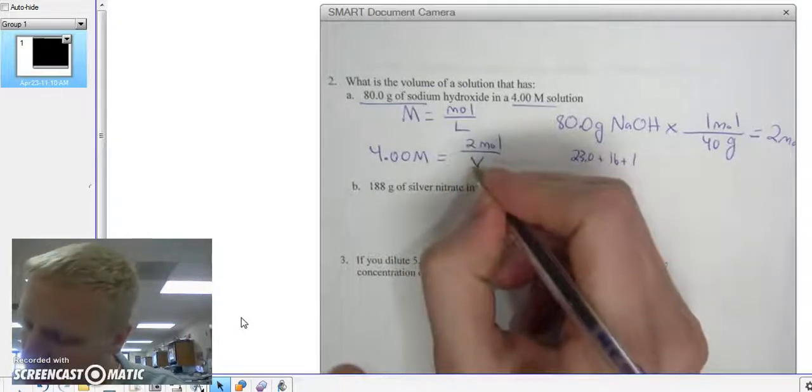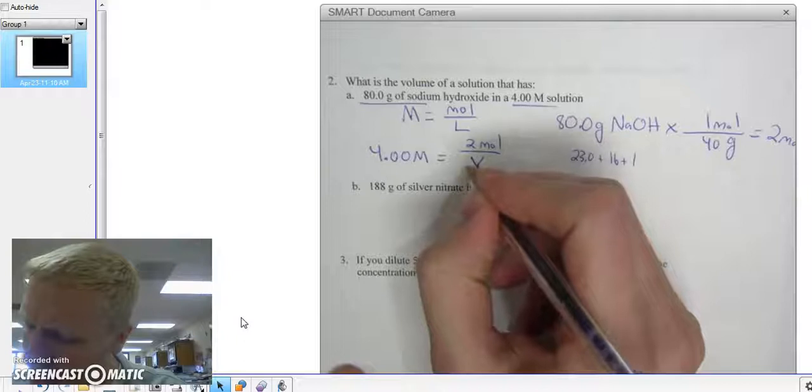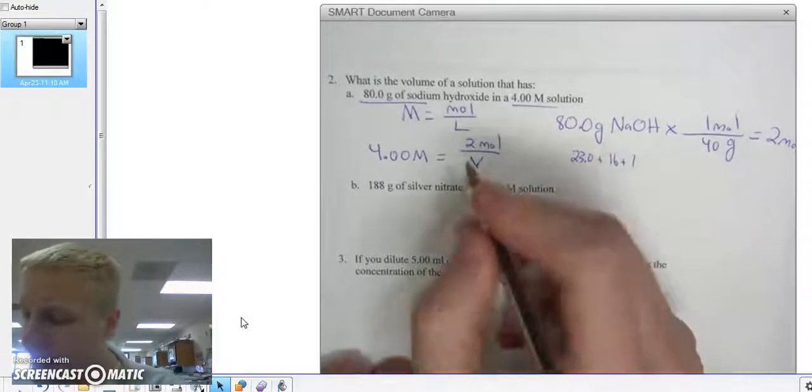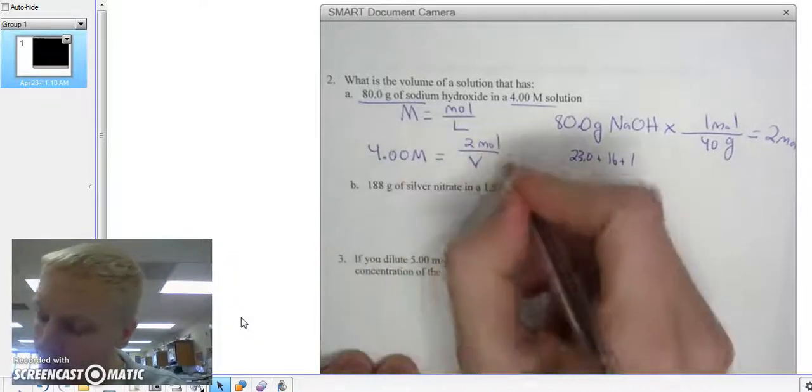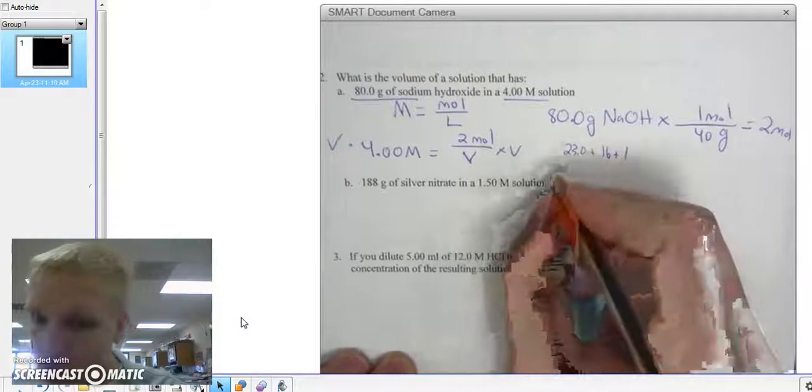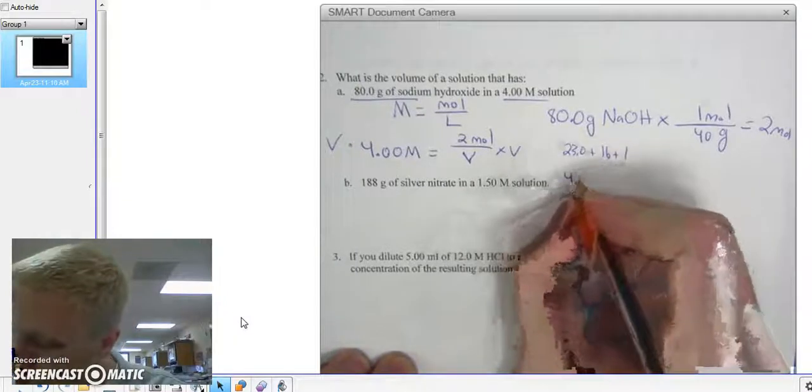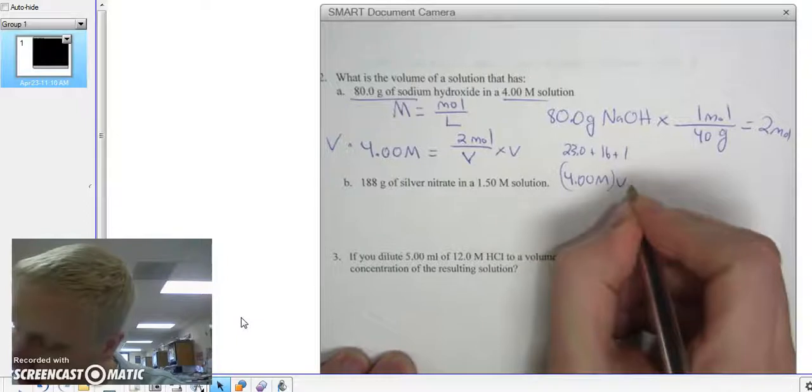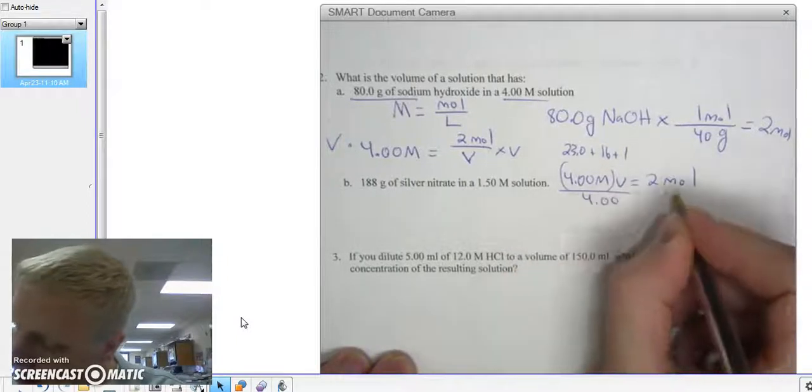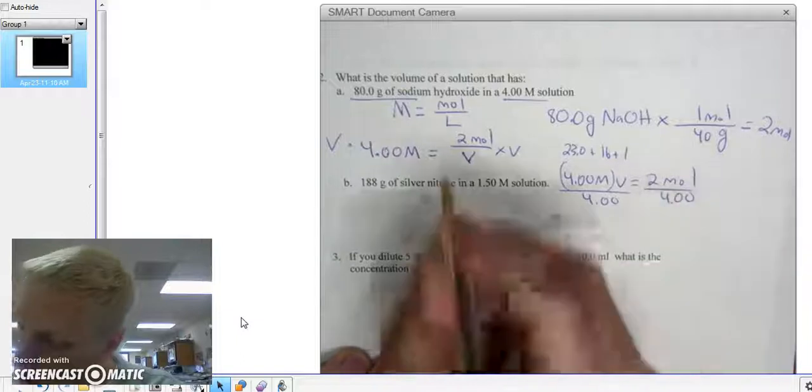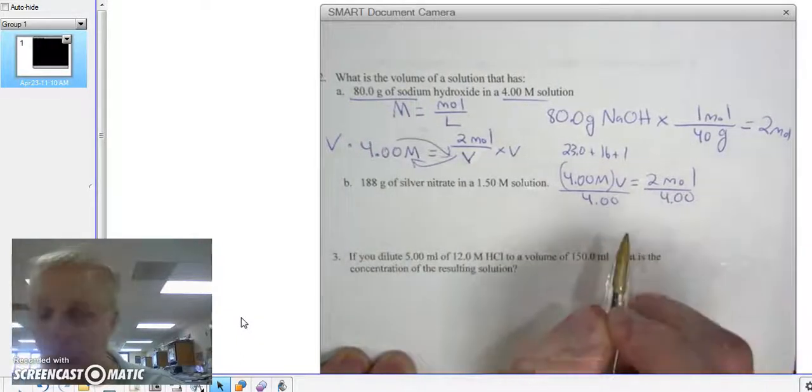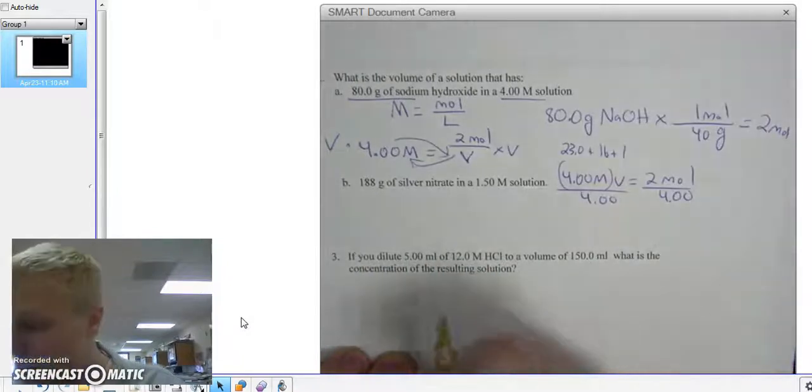A lot of times, people take 4 moles and divide it by 2. You can't do that. You have to do correct algebra. You've got to multiply both sides by the denominator. Multiply by V. And that's going to bring me to 4.00 molar times V equals 2 moles. And I'm going to divide both sides by 4. Or what I could do is I could just switch the V with my 4 flip-flop. That would also work.